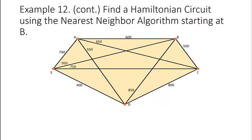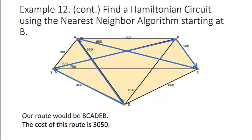Here's an example for you to try. Pause the video and see if you can find a Hamiltonian circuit using the nearest neighbor algorithm, this time starting at vertex B. The answer is B, C, A, D, E, B and the cost of this route is 3050. Notice this is the same graph as the previous example where we started at vertex A and found a different route. It's very important to know which vertex you're starting at because it will affect your answer using the nearest neighbor algorithm.